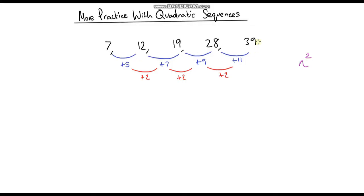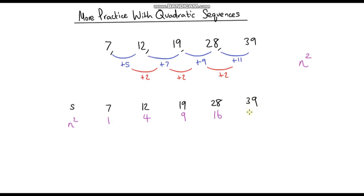Now if I write down my original sequence again and I know that my nth term is going to include n squared, let's write down the sequence n squared. 1 squared is 1, 2 squared is 4, 3 squared is 9, 4 squared is 16, and 5 squared is 25. So my sequence starts with n squared. To see what I've got left over, I can subtract n squared from my original sequence and that will tell me what's left.